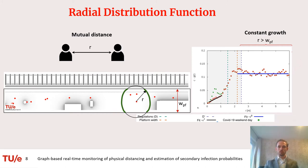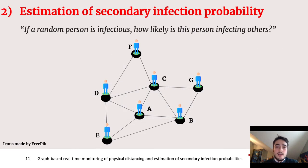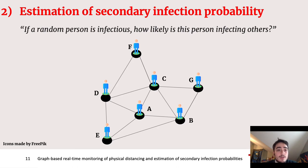I would like to give the word to Andrea for the next part of this talk. Thank you. Now we can start our discussion about the estimation of secondary infection probability. Basically, we want to answer the question: if a random person is infected in our network, what is the probability to have another one infected at the end of the time window in which this network is built?